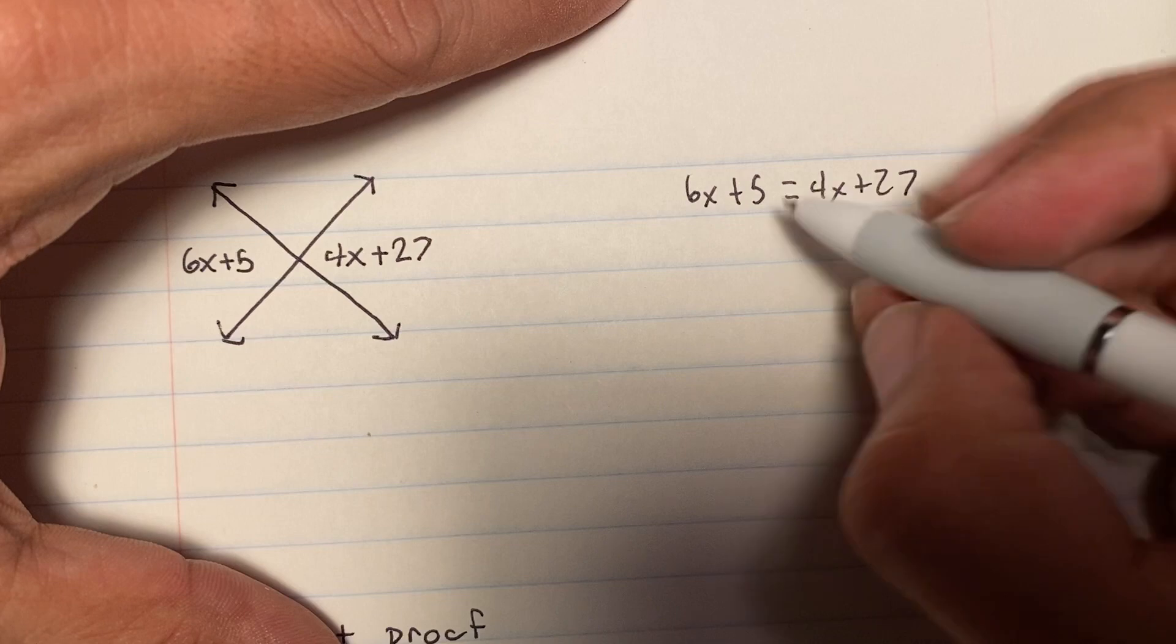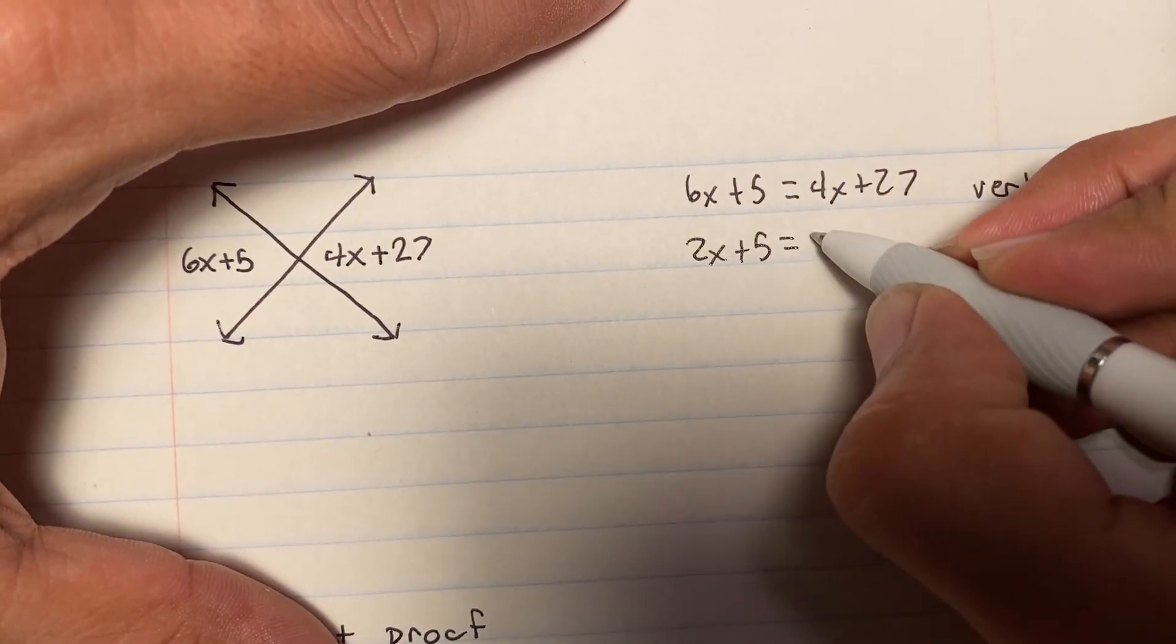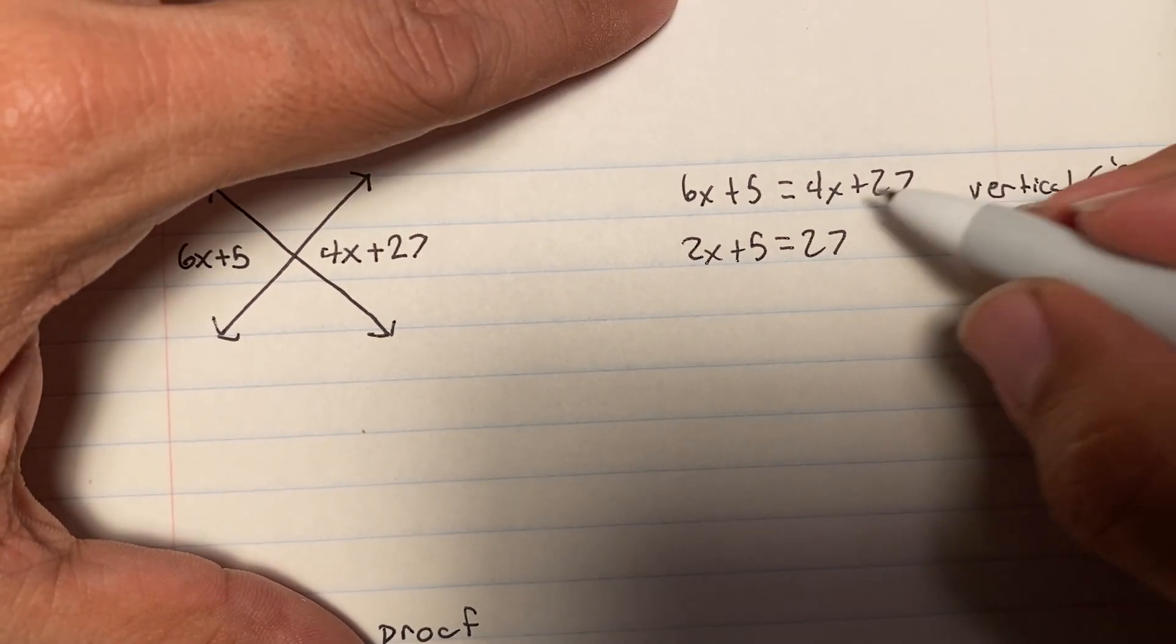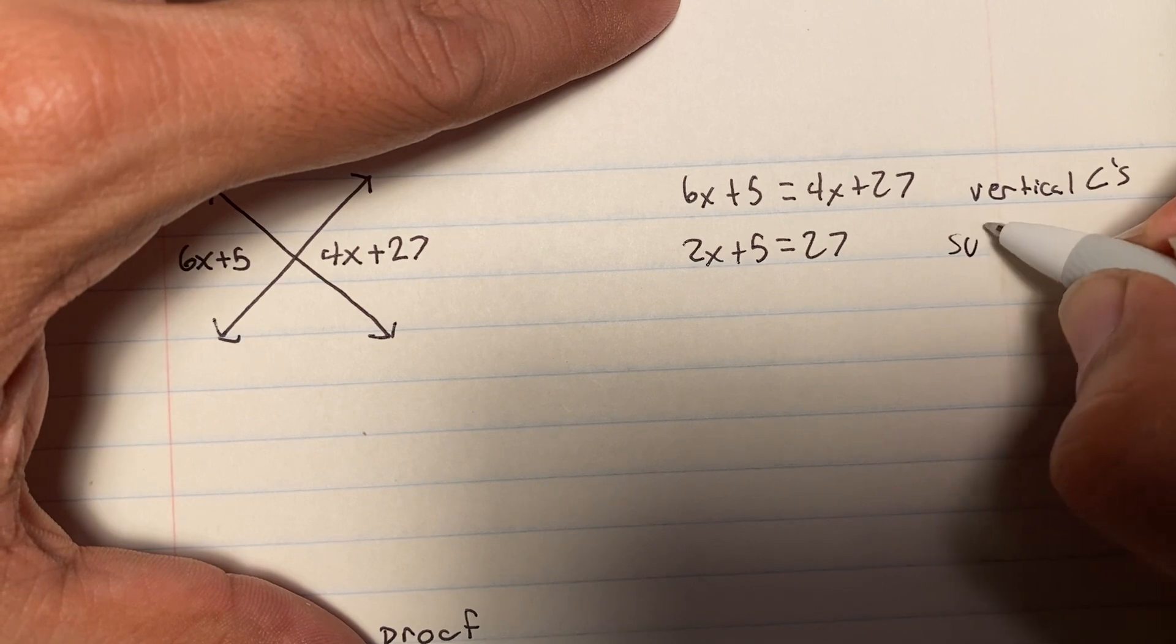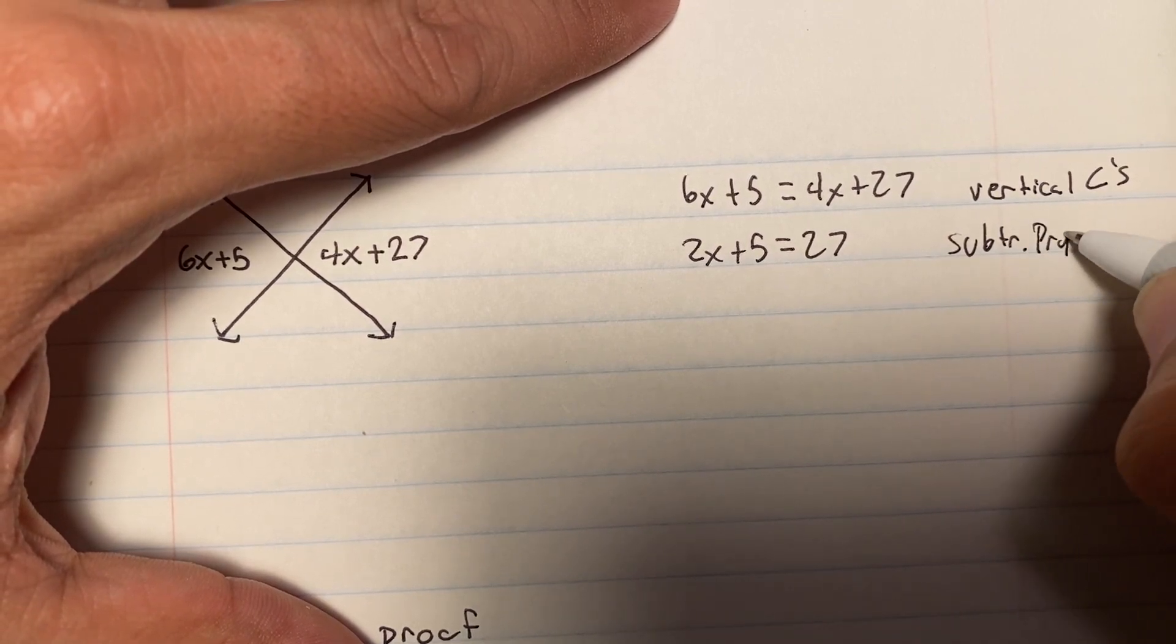Then, I have this next line is going to say 2x plus 5 equals 27, and I'm going to say subtraction property of equality.